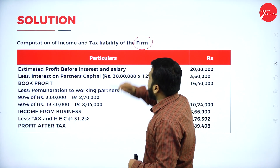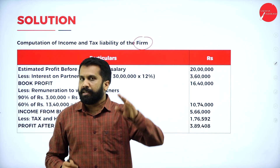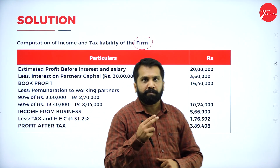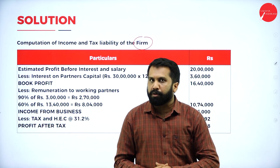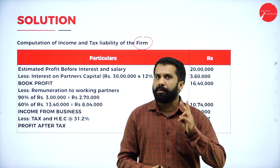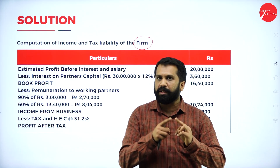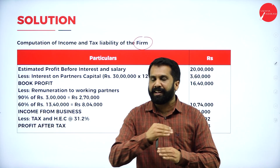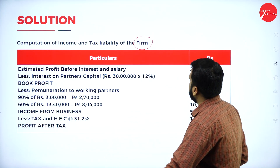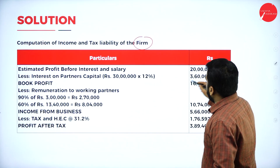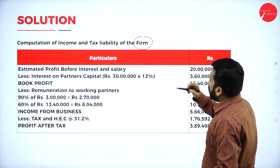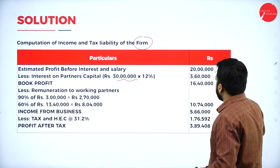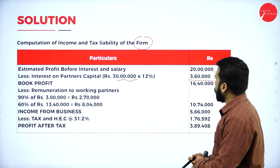First, we will go with the partnership form. The procedure is: net profit minus interest gives you book profit, then minus remuneration. There are two remunerations — actual and maximum permissible — whichever is less. Estimated profit is 20 lakh. Less interest on partners' capital: 30 lakh × 12% = 3 lakh 60,000. Your answer is 16 lakh 40,000.